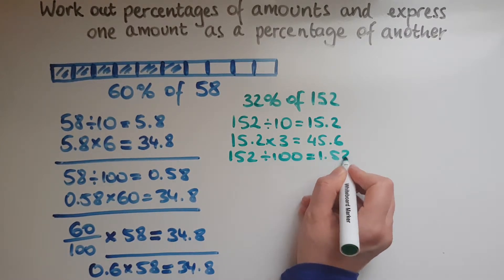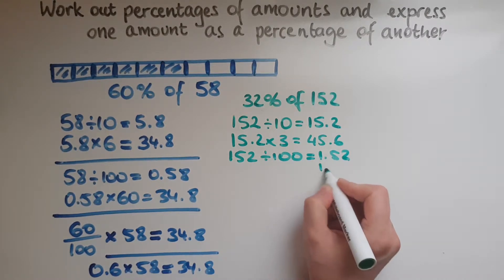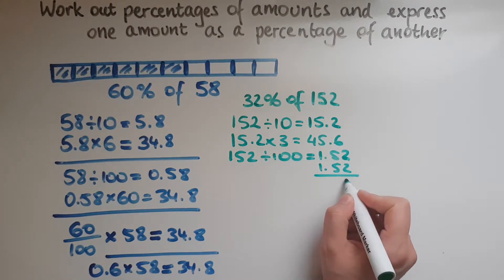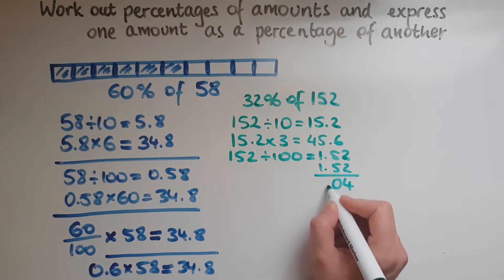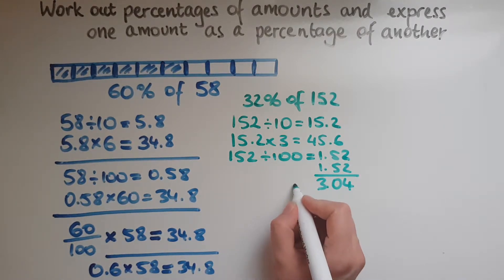And I need another lot of 1.52 to make 2%. So that is 3.04, which I need to add to the 30%, which was 45.6.